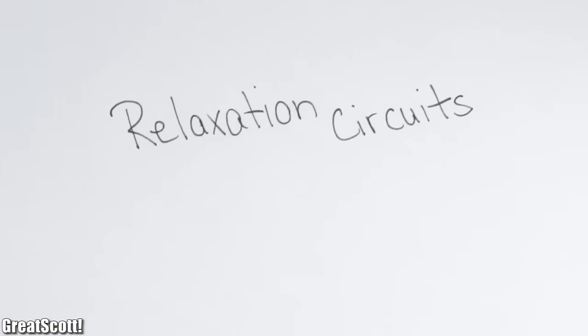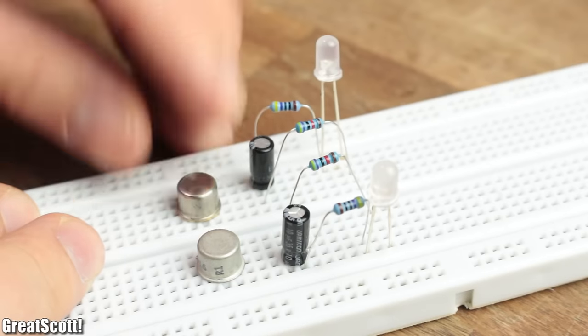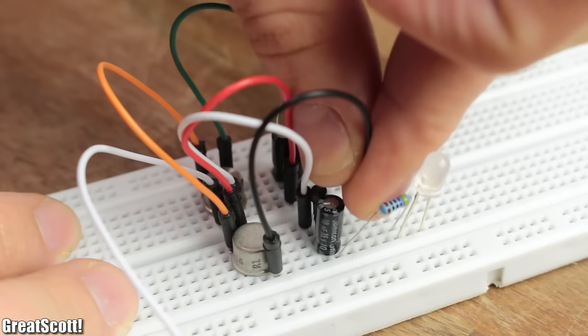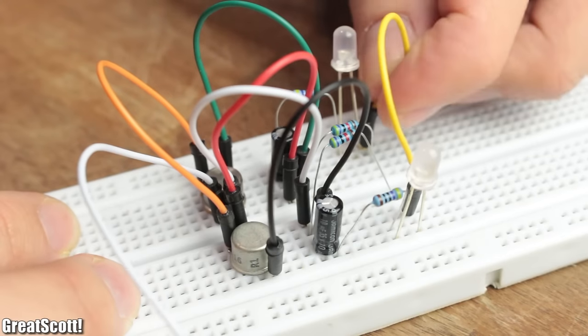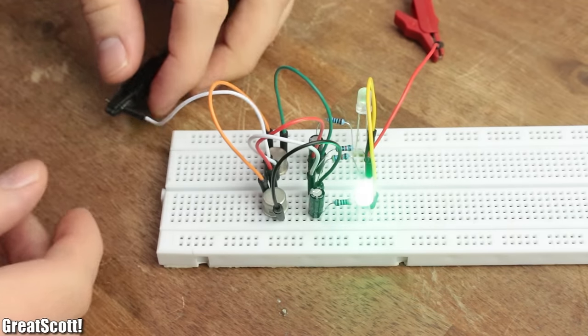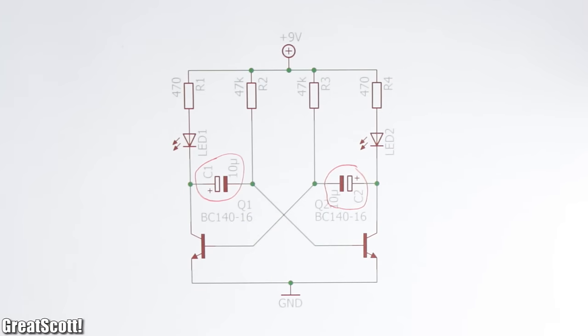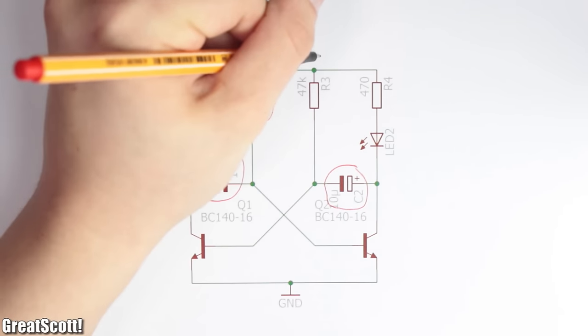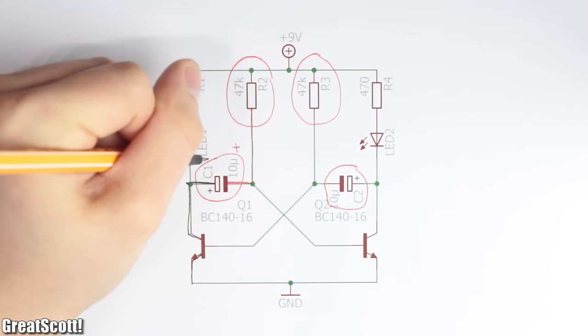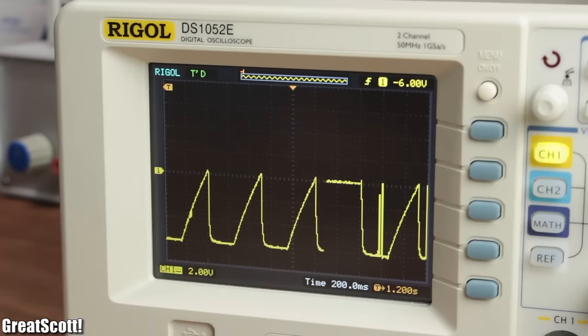First off, relaxation circuits, especially with RC components. This astable multivibrator is a classic and rather simple example. The main principle is about using two capacitors C1 and C2 which get charged alternating through a resistor to a certain threshold voltage of the transistor, in this case around 0.3 volts.